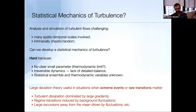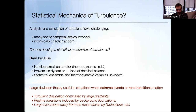This is much more complicated than thermal systems because unlike thermal systems there is no clear small parameter, no thermodynamic limit; the dynamics is irreversible, there is no detailed balance, which is fundamentally different from thermal systems. As a result, we don't know whether the statistics can assemble to determine dynamic variables. What I'm going to discuss today is much less ambitious—simply to discuss certain instances in which large deviation theory can be useful to describe the statistics of extreme events or rare transitions.